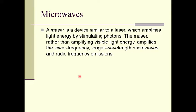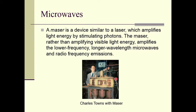Microwaves are also used in masers. A maser is a device similar to a laser which amplifies light energy by stimulating photons. A maser, rather than amplifying visible light, amplifies low-frequency, longer-wavelength microwaves and radio frequency emissions. MASER stands for Microwave Amplification by Stimulated Emission of Radiation. This is the first maser built by Charles Townes.